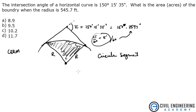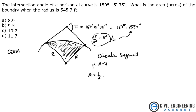In order to solve for the area, we're going to turn to appendix A-7. That's the page that has various areas, and it's very helpful on the CERM — I'd definitely recommend tabbing it. For a circular segment, the area is equal to one-half phi r squared.